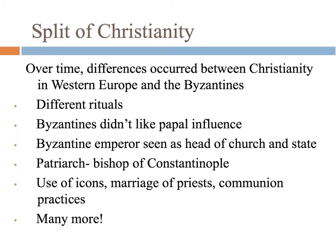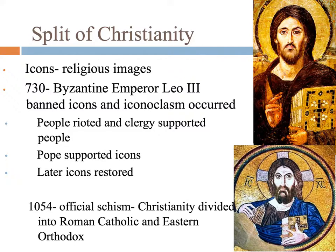They also appointed their own head bishop called the patriarch — the Pope is supposed to be the head bishop. They also had disagreements over the use of icons, the marriage of priests, and communion practices. In the Catholic Church, priests do not get married. One of the issues was over icons — religious images like these images of Jesus. People liked icons because at this time a lot of people can't read or write, so pictures help people identify with stories of the Bible. But other people felt icons went too far and people actually started worshiping the icons, which is not what you're supposed to do — you're supposed to worship God.